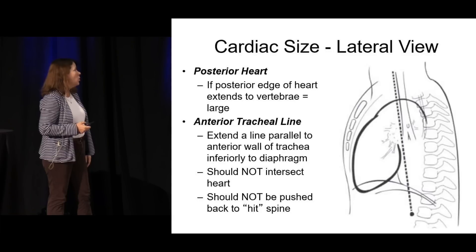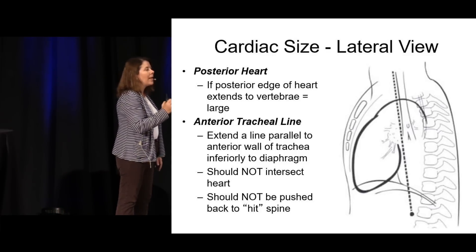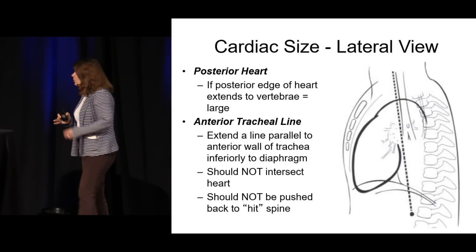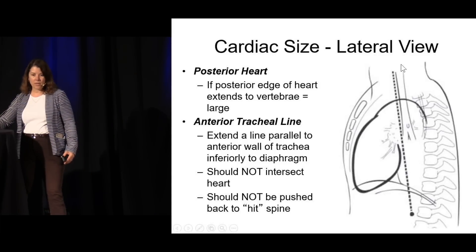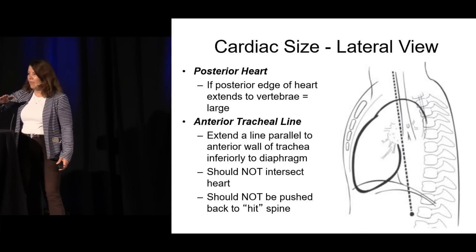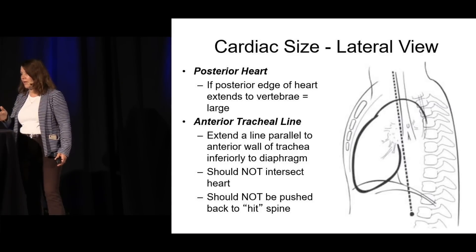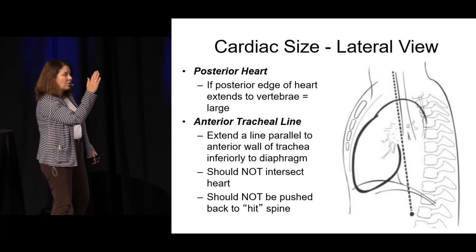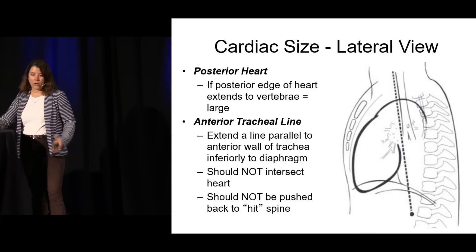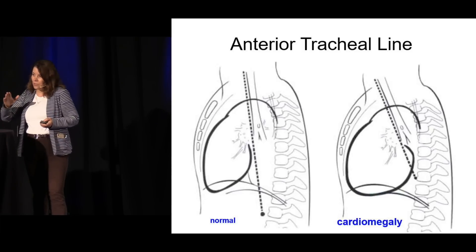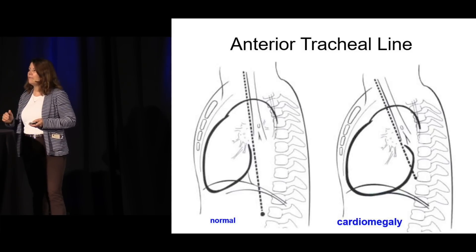The real answer is on the lateral. The first thing you want to look at is the posterior edge of the heart — if it starts to encroach on the vertebrae, that's a generous heart and you may be dealing with congenital heart disease. The other thing to look at is what's called the anterior tracheal line. You run a line down the very front of the trachea. What should happen is it should go down and bisect the diaphragm. If it's pushed backwards — if it starts to go toward the vertebrae instead of down toward the diaphragm — that's a sign you may be dealing with cardiomegaly.